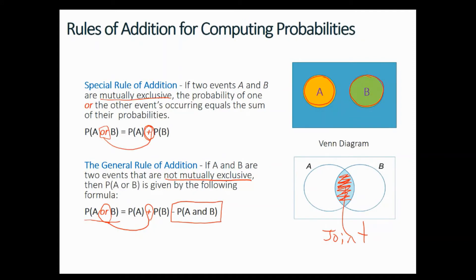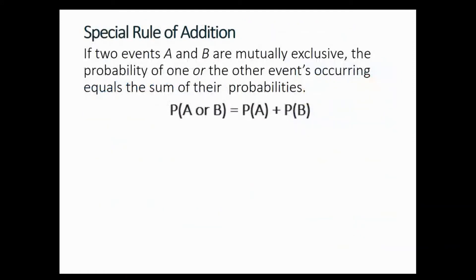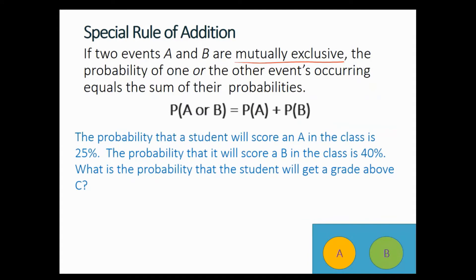These diagrams are called Venn diagrams. Let's see one example for the special rule of addition, which is used for mutually exclusive events: P(A or B) = P(A) + P(B), meaning two events are not happening at the same time. The probability that a student will score an A in the class is 25%, and the probability of scoring a B is 40%. What is the probability the student will get a grade above C?